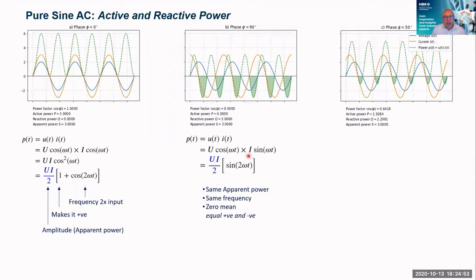Now, if we offset this by 90 degrees, that current now becomes a sine wave. And if we simplify this equation, we get this one. So again, we've got the same apparent power, same amplitude, UI/2. We've got the same frequency, the 2ωt. But now we've got a zero mean. So there's equal positive and equal negative.